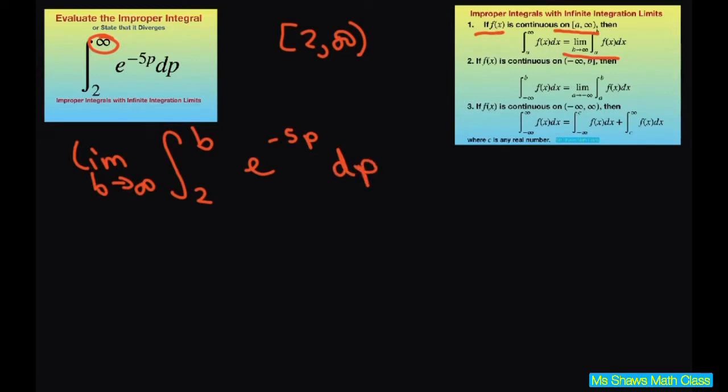Now we just integrate this and write the limit as b approaches infinity. And when you evaluate this you're going to get negative 1 fifth e to the power of negative 5p. And then evaluate this at 2 to b.